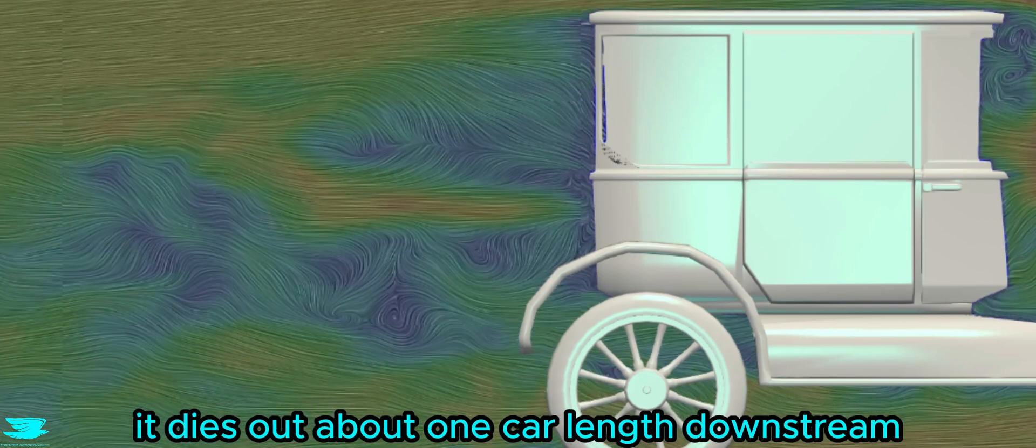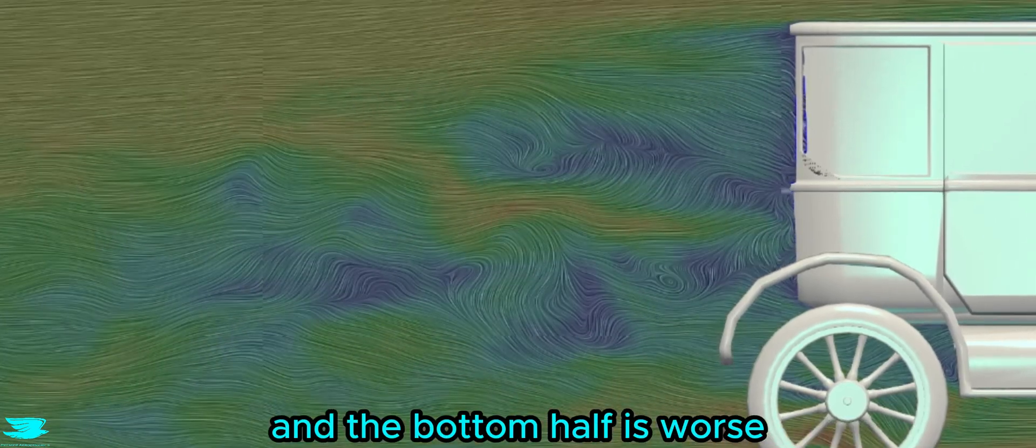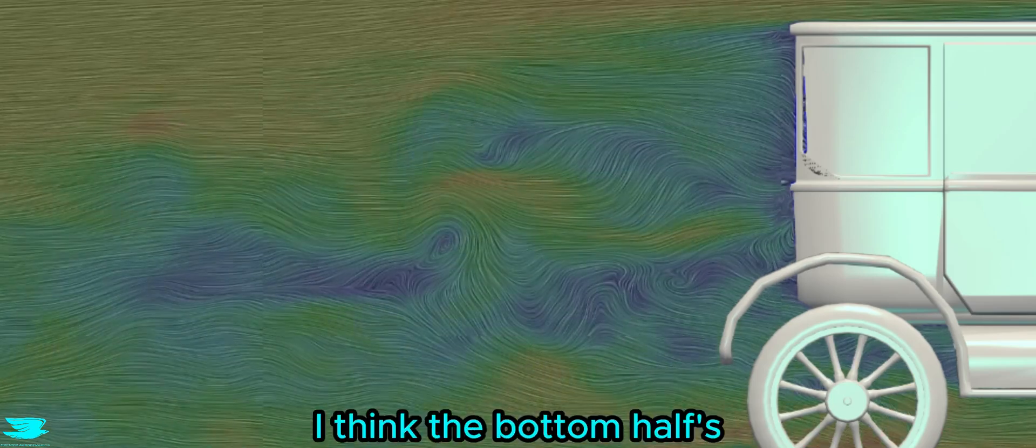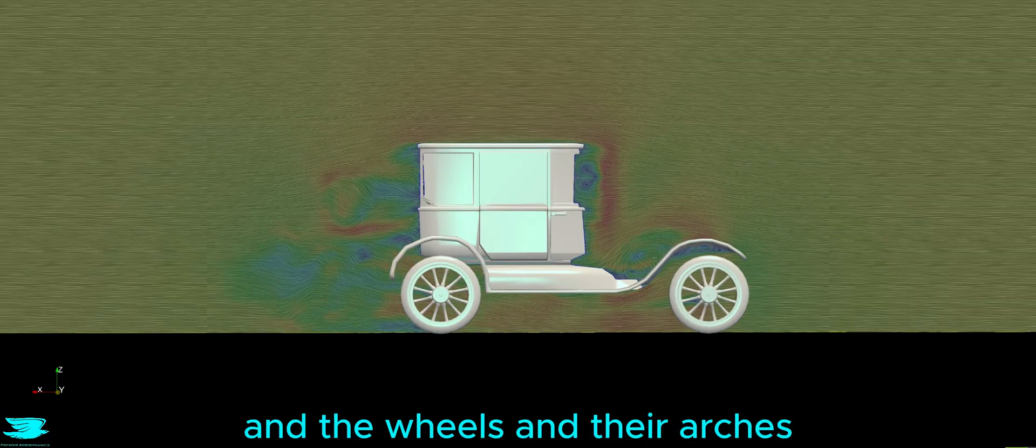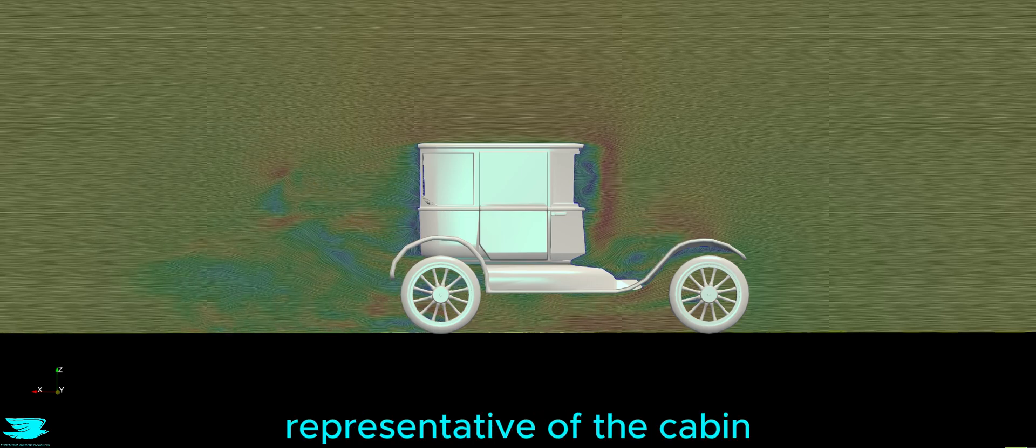It dies out about one car length downstream, and the bottom half is worse than the top half. So I think the bottom half's wake is really exacerbated because of the undercarriage and the wheels and their arches, while the top half is more representative of the cabin itself.